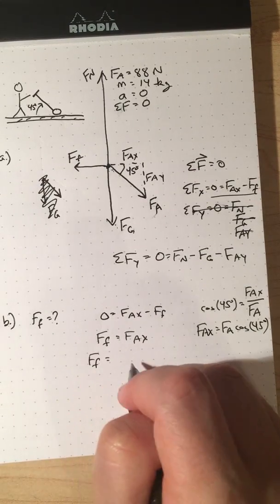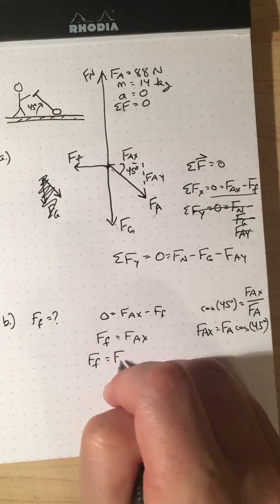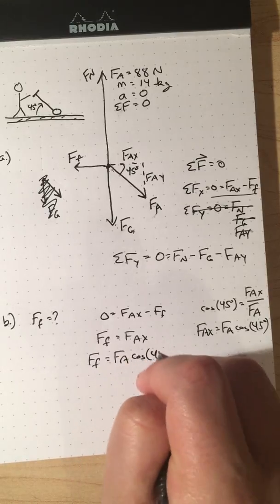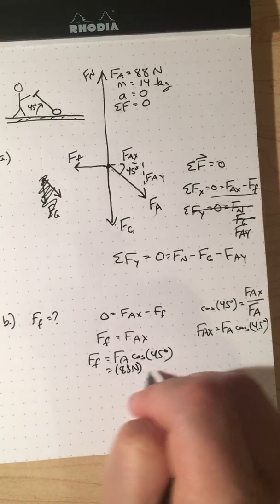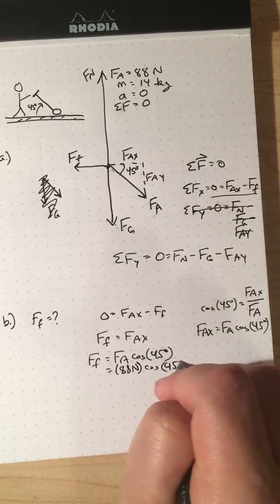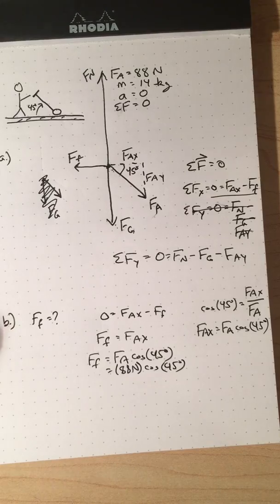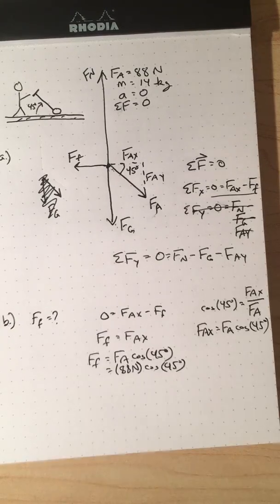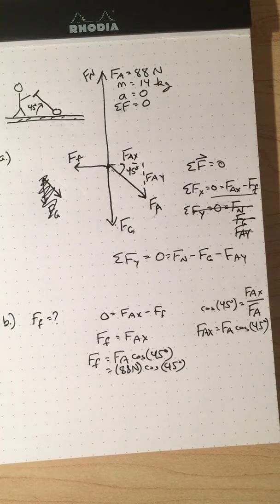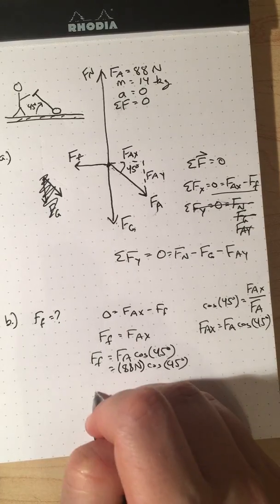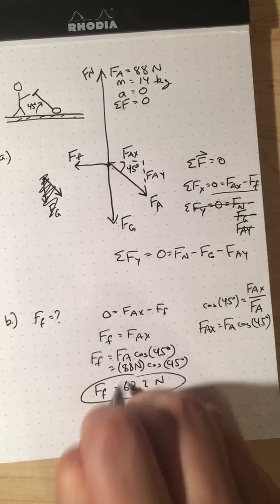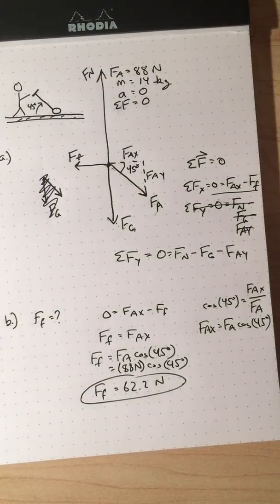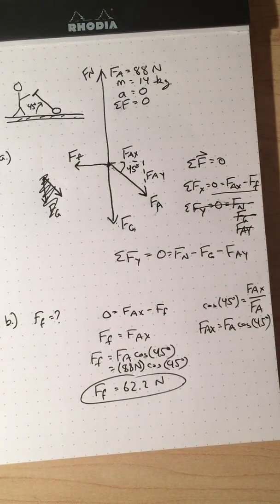Force of friction equals F_A times the cosine of 45, which would be 88 newtons times the cosine of 45 degrees. I'm getting 62.2 newtons. All right. And so that's part B.